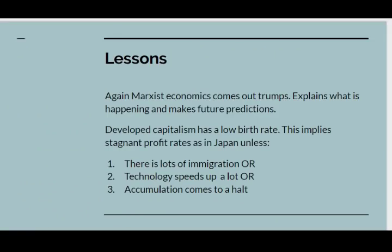What are the lessons we can draw from this? Marxist economics comes out trumps — it explains what's happening and makes testable future predictions. It says that developed capitalism has a low profit rate, and this implies stagnant population rates as in Japan, unless either there's a lot of immigration, or technology speeds up a lot compared to what it is now, or accumulation comes to a halt and the capitalist class spend their profits on luxuries. At the moment, spending profits on luxuries is their preferred way of raising the rate of profit.